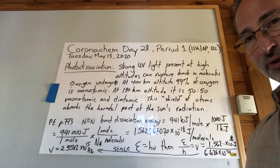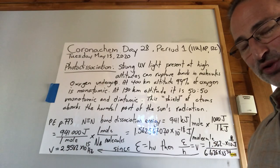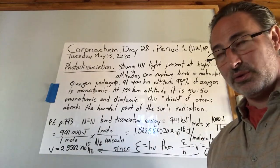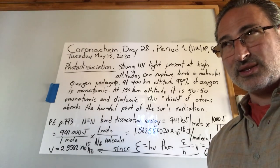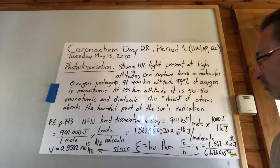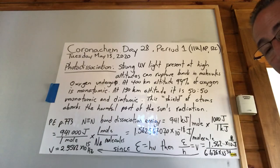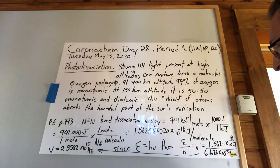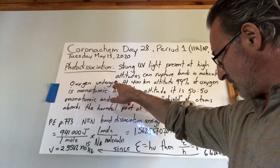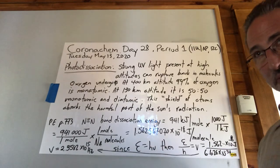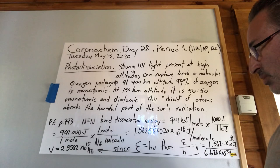With regards to photodissociation, a lot of the sun's electromagnetic spectrum is actually incompatible with life. If we didn't have an atmosphere, the intense UV radiation emitted from the sun would kill everything on the surface of the earth. But strong UV light present at high altitudes is known to rupture bonds in molecules. Oxygen undergoes at 400 kilometers altitude this process of bond rupture because of the strong UV radiation.